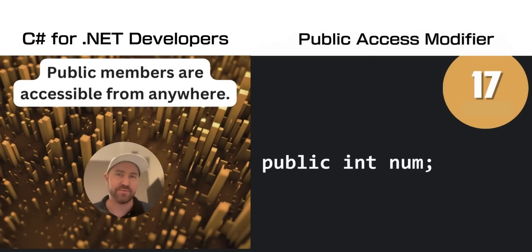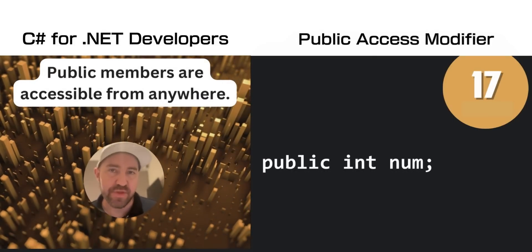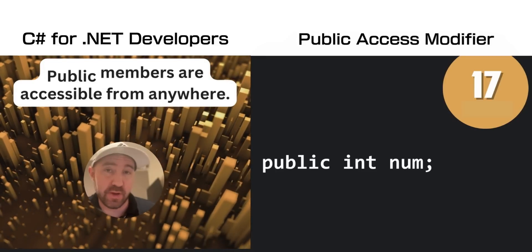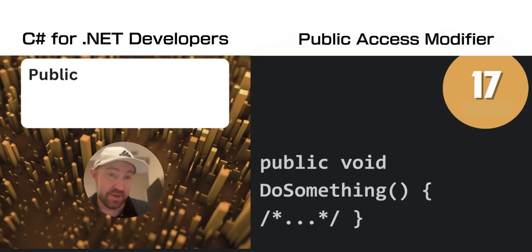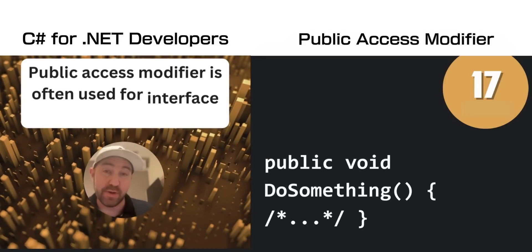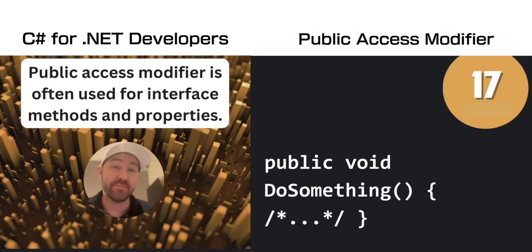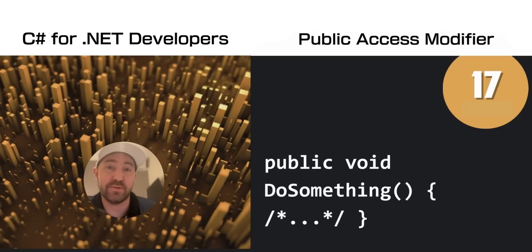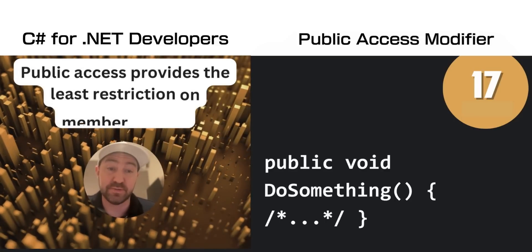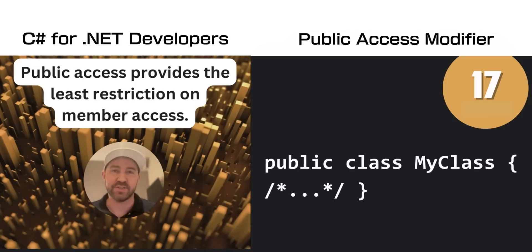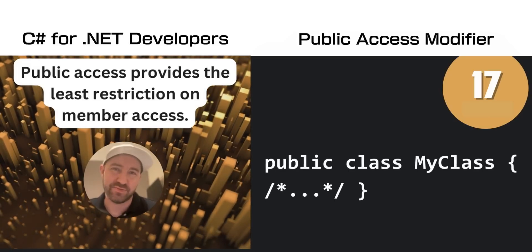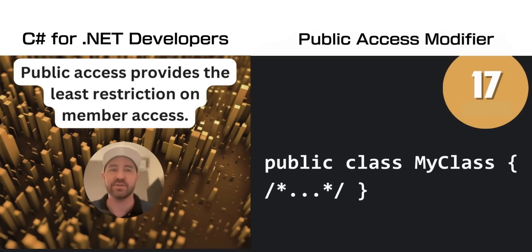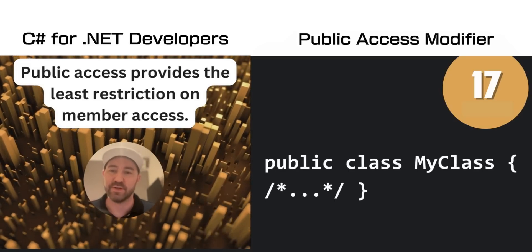Let's talk about access modifiers, starting with public. The public access modifier means that this member can be accessed from absolutely anywhere. You normally use it for interface methods and properties. It is the least restrictive of all the member access modifiers.